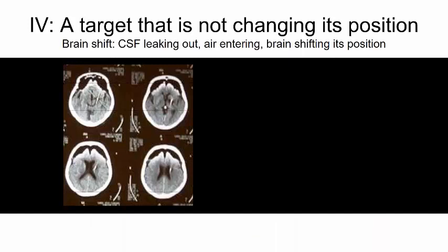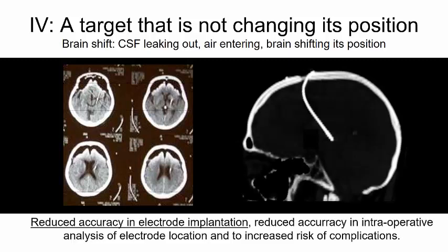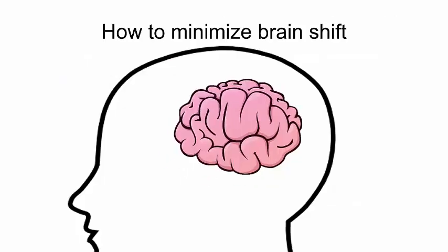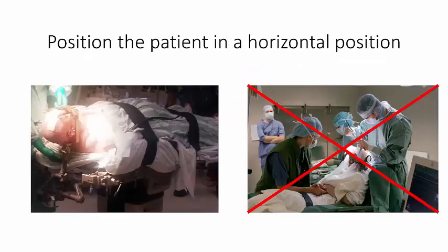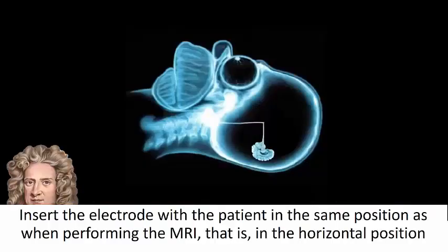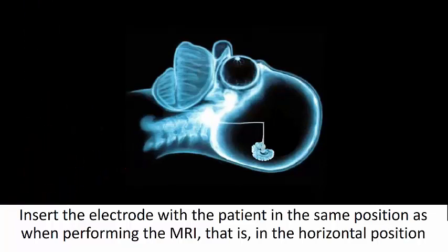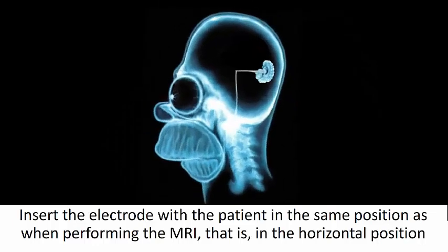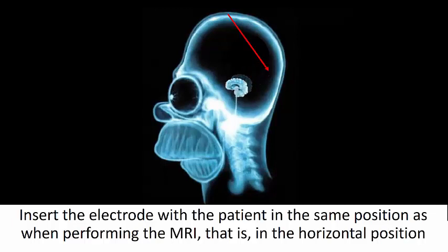Finally, we need a target that is not changing its position. We want to avoid brain shift when CSF is leaking out, air is entering and the brain is changing its position. This leads to a reduced accuracy in electrode implantation and several other problems as well. So, how can we minimize brain shift? One of the most important steps is probably to position the patient in a horizontal position. We need to take gravity into account. If we target the lying brain, but we implant the sitting brain, then there is a risk that the electrode might end up somewhat too high and too posterior.